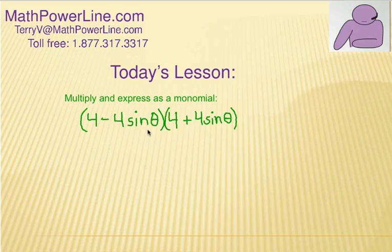Alright, here's the first problem for you to try. We have 4 minus 4 sine theta multiplied by 4 plus 4 sine theta. Multiply them together using the FOIL method, and see if you can do some substituting and simplify the entire thing. Good luck.